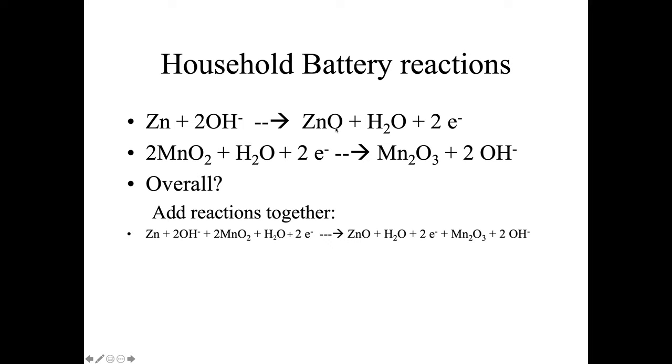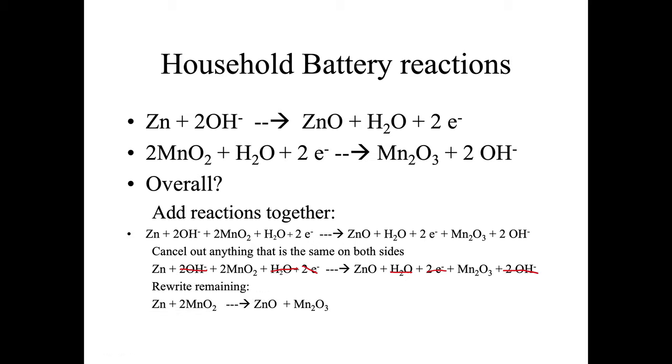On the right, we have the zinc oxide, water, and two electrons. Then the Mn2O3 and the two hydroxides. Now you see how the hydroxides, the water, and the electrons are the same on both sides. So we're going to cancel out anything that's the same on both sides. The hydroxides cancel, the waters cancel, the two electrons cancel. And then the next thing is just to rewrite it, but clean it up. That's the overall reaction in a household battery.